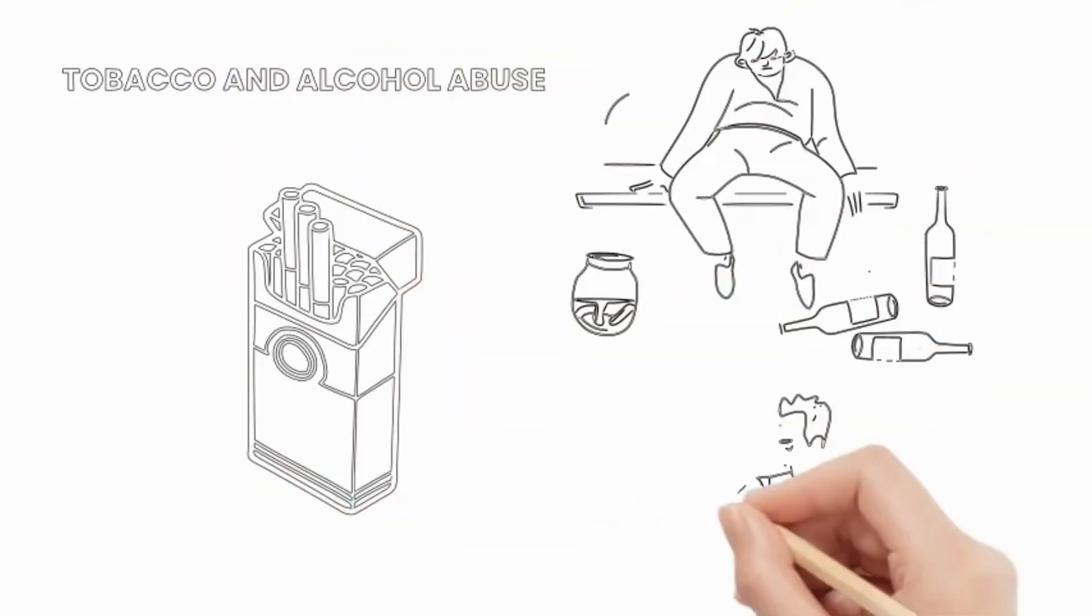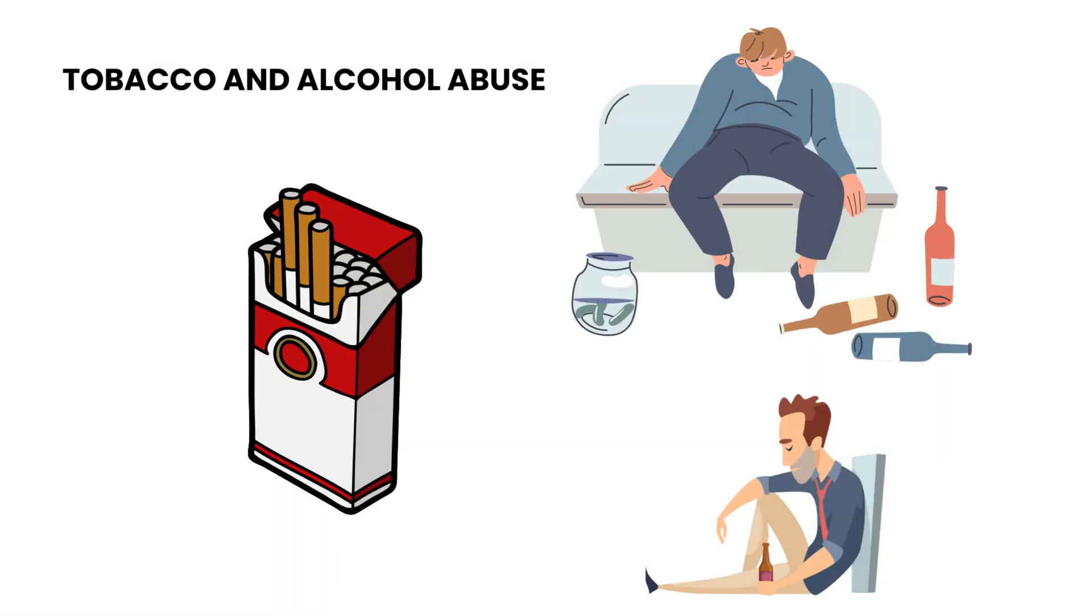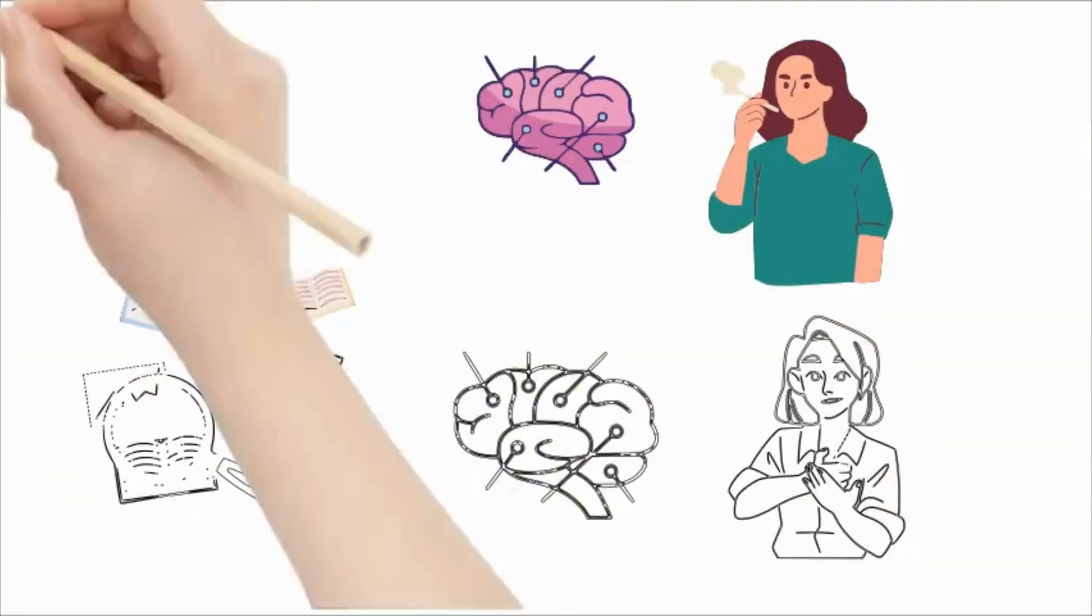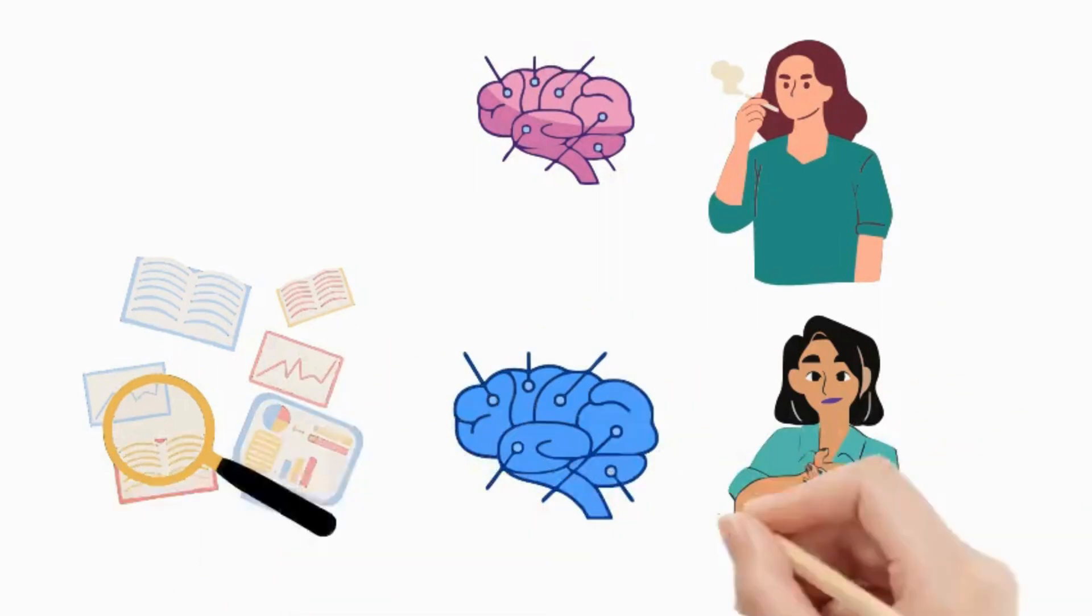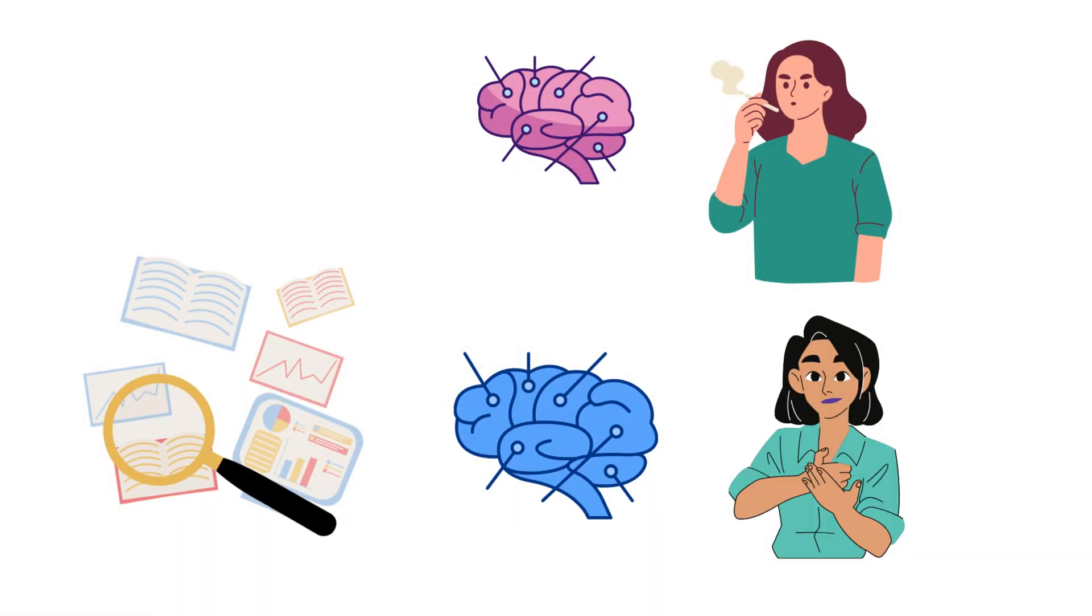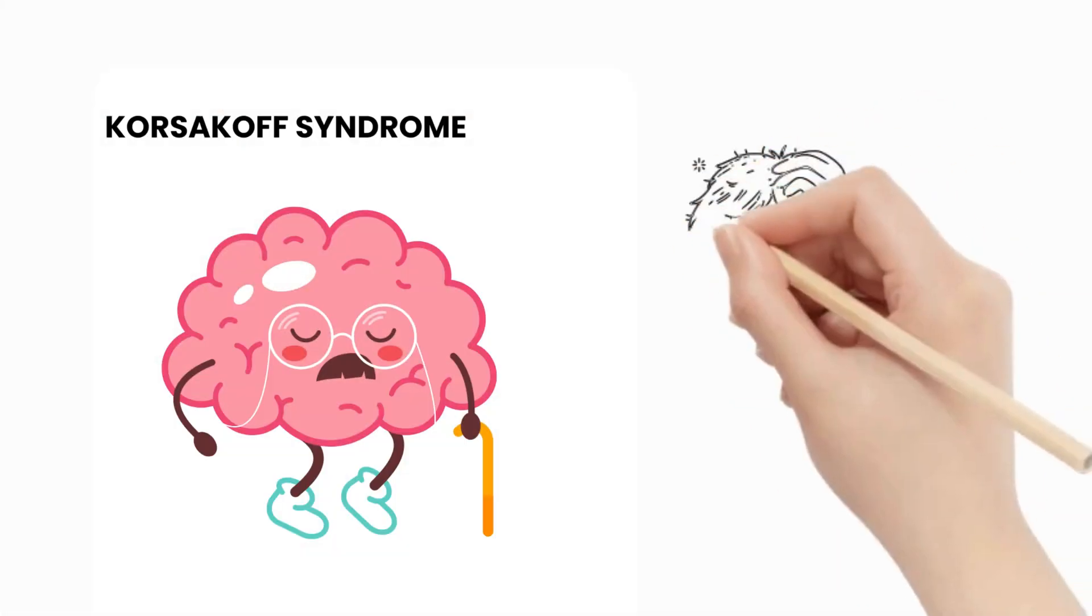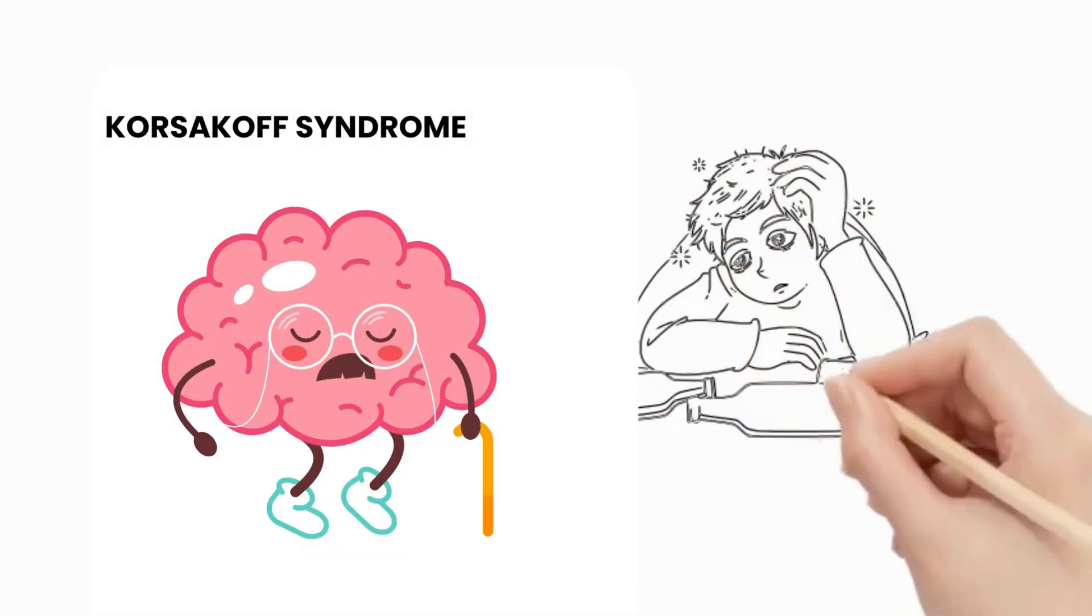Tobacco and alcohol abuse: Research shows that regular smokers tend to have thinner cortical areas compared to non-smokers. Additionally, alcohol abuse can significantly impair the brain's memory functions. Korsakoff syndrome, a form of brain disorder linked directly to excessive alcohol consumption, can lead to memory reduction.